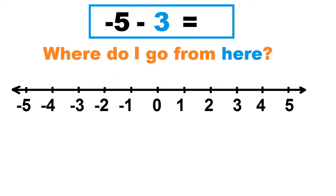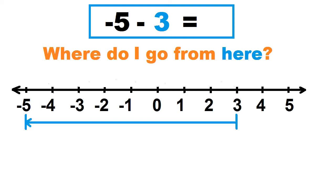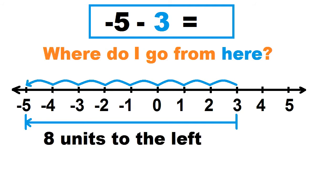Another example: negative 5 minus 3. Where do I go from 3? Count the number of units from 3 to negative 5, and take note of the direction. To the right is positive, to the left is negative. Let's count: 1, 2, 3, 4, 5, 6, 7, 8. That's 8 units to the left. So negative 5 minus 3 equals negative 8.